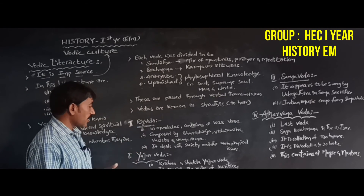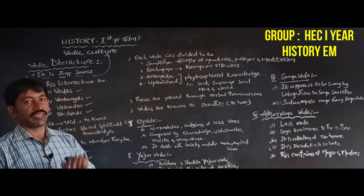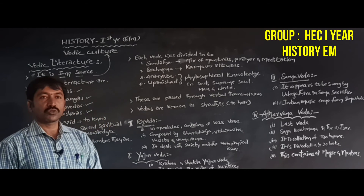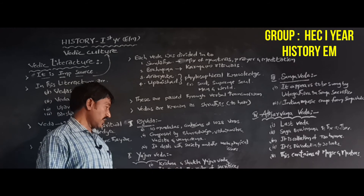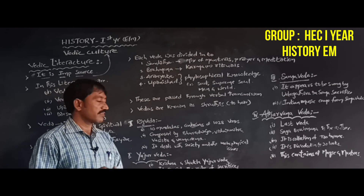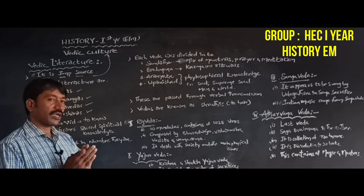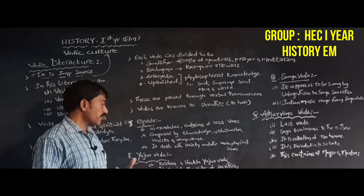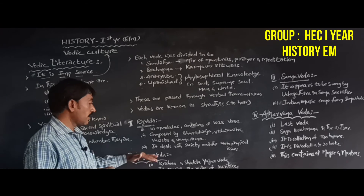The second Veda is Yajur Veda, which is divided into two parts: Krishna Yajur Veda and Shukla Yajur Veda. Yajur Veda consists of the rules of sacrifices.